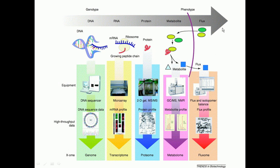So if we make a journey from genotype towards phenotype, what different molecules do we encounter? At the very beginning, genotype means the study of genes — the chromosome, inside that the DNA, inside that the gene. Going slightly downstream, once the DNA is there, RNAs are produced from the DNA as messengers of the DNA sequences. The study of all the RNA molecules present in a cell under a specific condition is called transcriptomics, and the complete set of those RNAs is called the transcriptome.